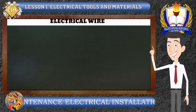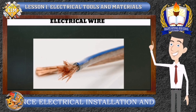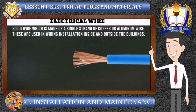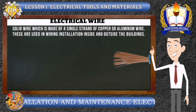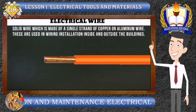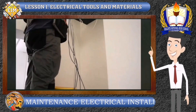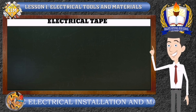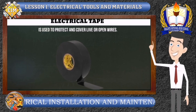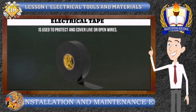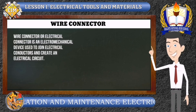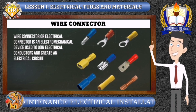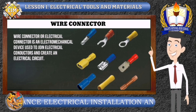Electrical Wire or Conductor is an electrical material that could be a stranded wire — made of multiple strands joined together to make a single wire — or a solid wire, which is made of a single strand of copper or aluminum wire. These are used in wiring installation inside and outside buildings. Electrical Tape is used to protect and cover live or open wires. Wire Connector or electrical connector is an electromechanical device used to join electrical conductors and create an electrical circuit.